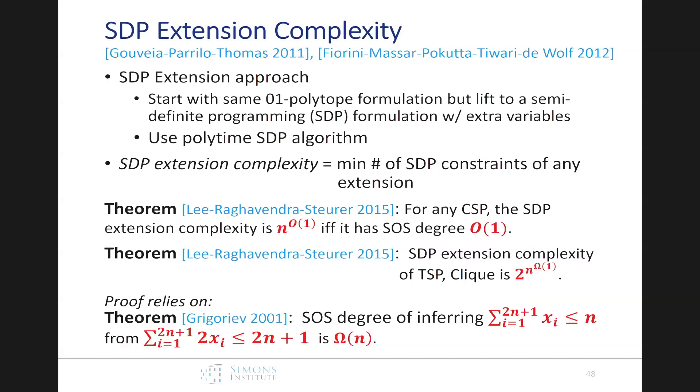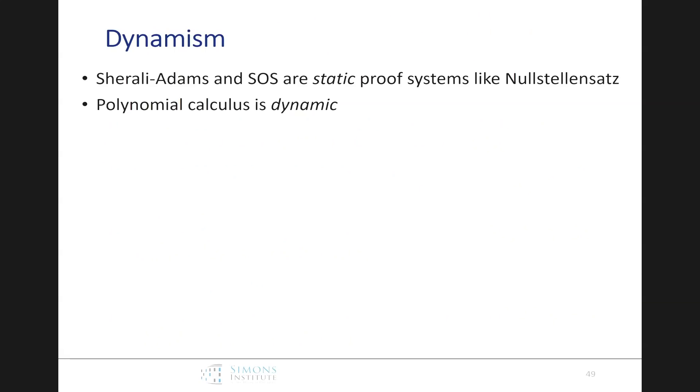Which says, if we have an inequality like this, and notice we've got this common factor two on the left-hand side, and we want to divide by a common factor two, here it's rounding down, because it's less than or equal to, then you get at most n, and Grigoriev showed that the degree had to be linear. And that's the key technical result that's behind these stronger results of Lee, Raghavendra, and Steurer. So, these systems aren't the only algebraic systems we could come up with. They're static systems, like Nullstellensatz. Polynomial calculus was dynamic. Well, very interesting result from last year. In fact, that even though sum of squares is static and polynomial calculus is dynamic, sum of squares can efficiently simulate it over the reals. So, that's a quite surprising result to me, pretty interesting result.